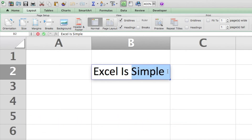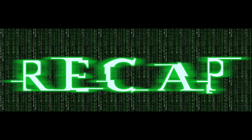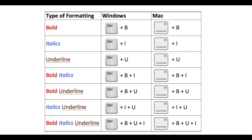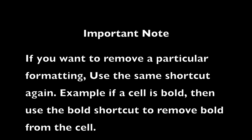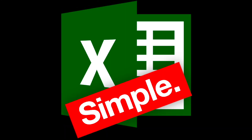Partial underlining of content is also possible, similar to bold and italics. You can also use combination keys for bold-italics, bold-underline, italics-underline, or all three together. Just keep the Ctrl or Command key pressed while the cell or cells are selected and press the B, U, or I keys to apply the combination of formatting on your cells.